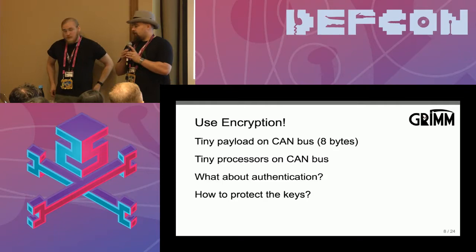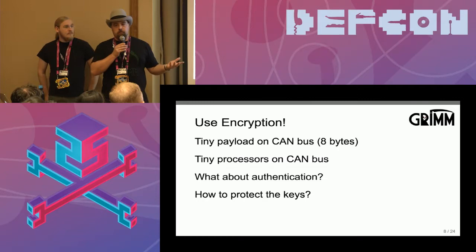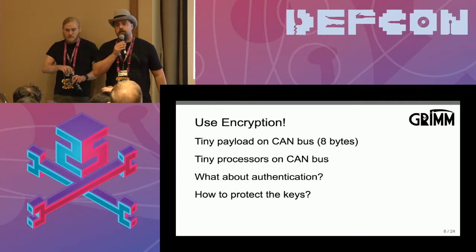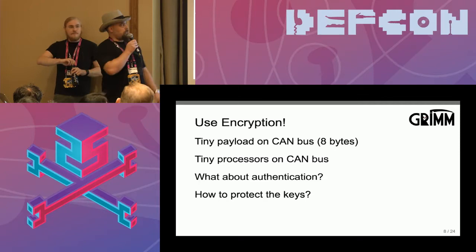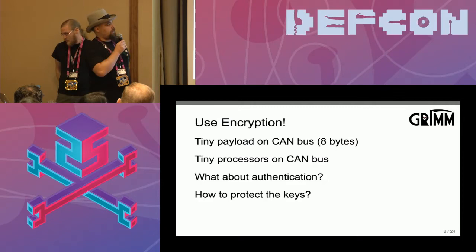CAN bus has a tiny payload — it's eight bytes in a packet. There are standards like ISO TP that allow you to send more traffic on the CAN bus, but CAN bus is also slow. About 500 kilobits per second is typical in a car, and there's a lot of data on the CAN bus. Your processors on a lot of these ECUs are eight to 16-bit micros with flash and RAM you can count on your fingers in kilobytes — very, very small processors.